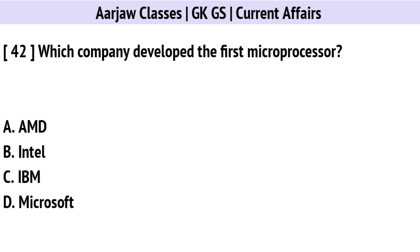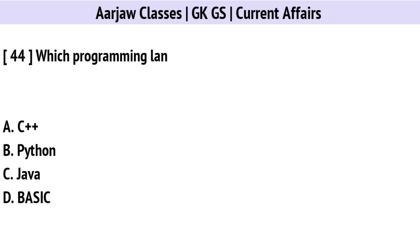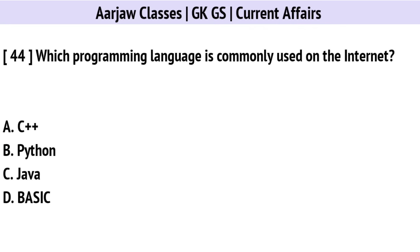Which company developed the first microprocessor? The correct option is B: Intel.